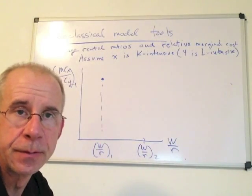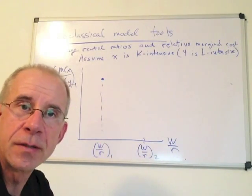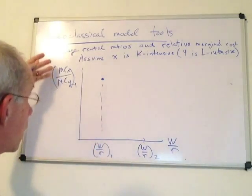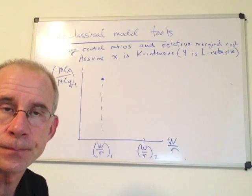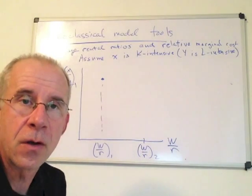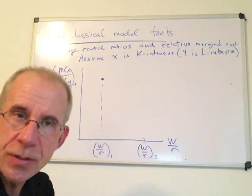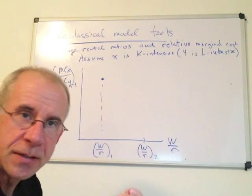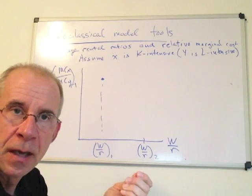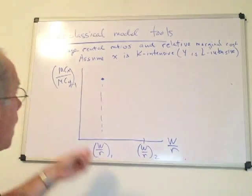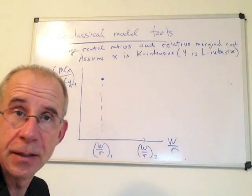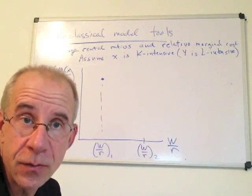So in that circumstance, when the wage goes up, that's going to increase the cost of both good X and good Y. They both use labor. They're both going to have higher costs. But the question to ask yourself is, which one of these industries is affected more by the increase in the cost of labor? And that is clearly going to be industry Y, the labor-intensive good.